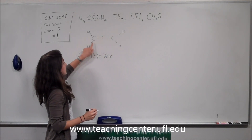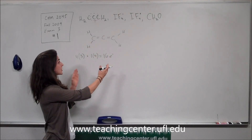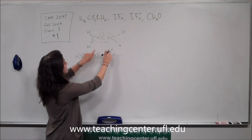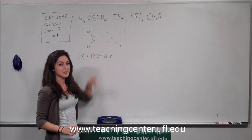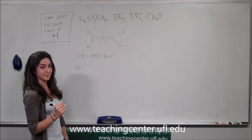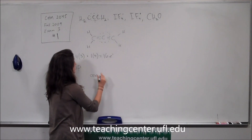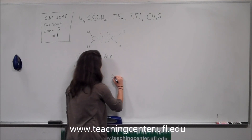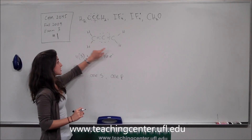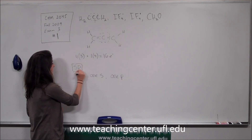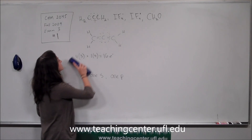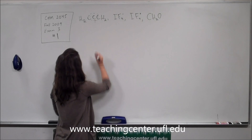Now we've completed the octet on all our carbons and the hydrogens are satisfied. Looking at the molecule, we see a planar orientation. The central carbon has two groups attached to it, so we need two hybridized orbitals. That means we have sp hybridization — we used one s orbital and one p orbital from carbon, which combine to make sp hybridized orbitals. So this molecule is sp hybridized.